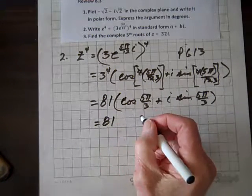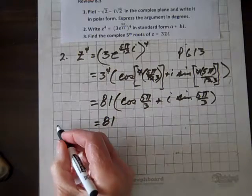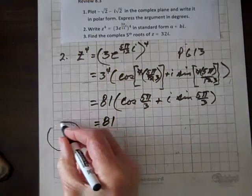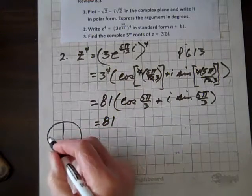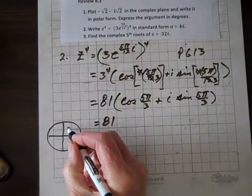And 5 pi over 3, let's look at where that lives. There's pi over 3,